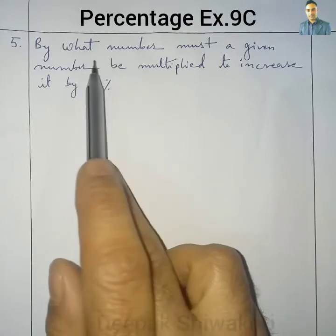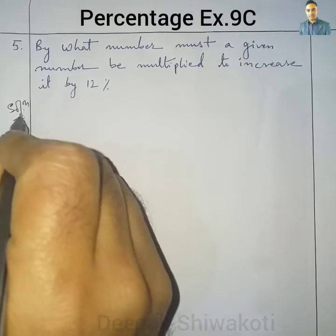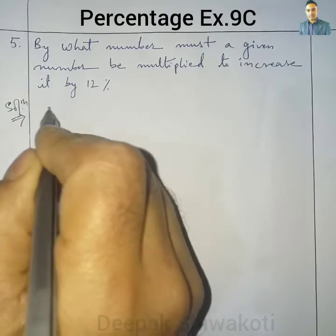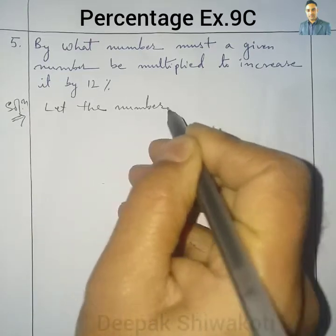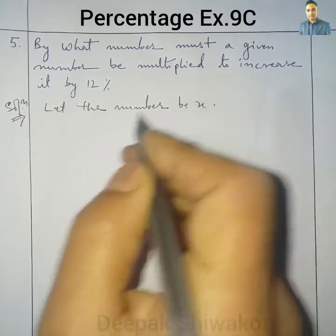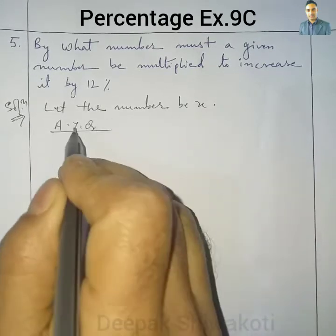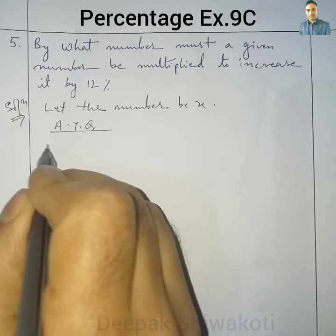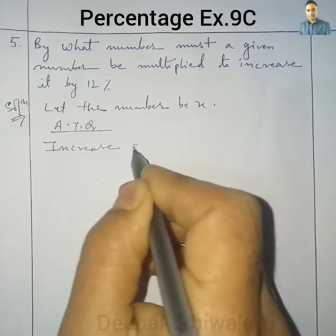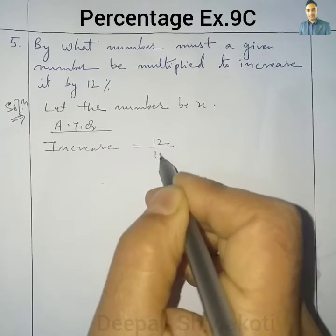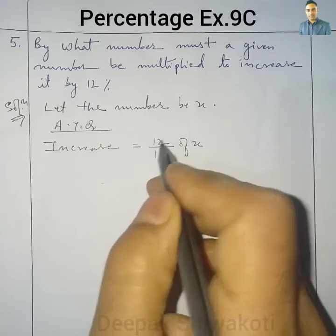We need to find this number. Assume the number be x — so let the number be x. According to the question, this number is increased by 12%, so the increase is equal to 12% of x.